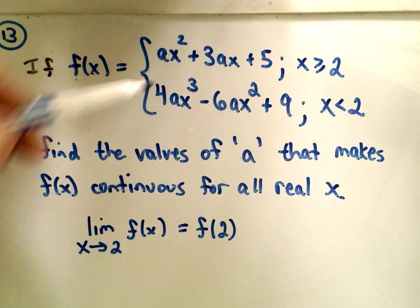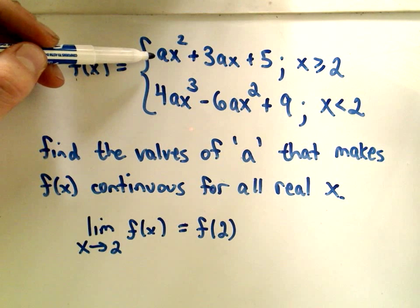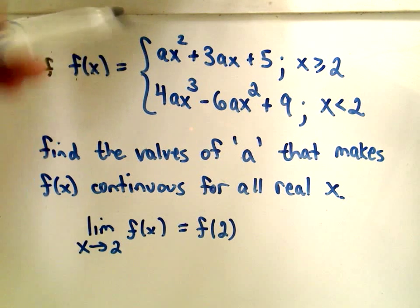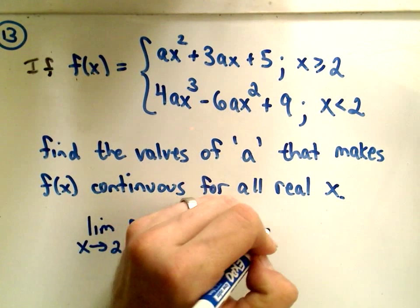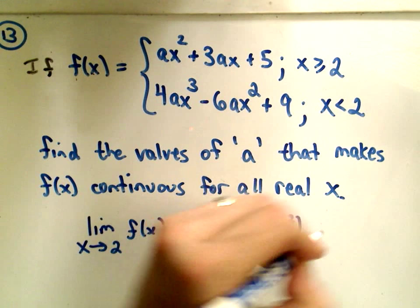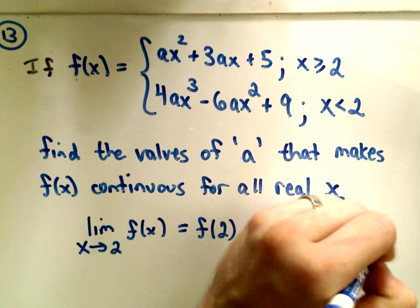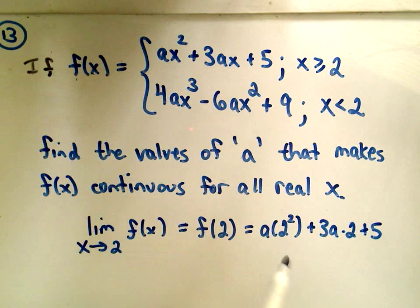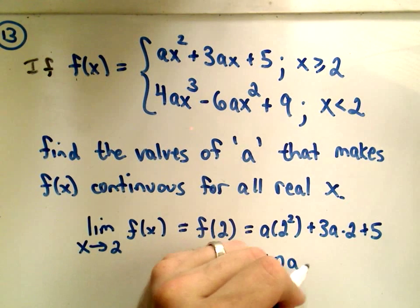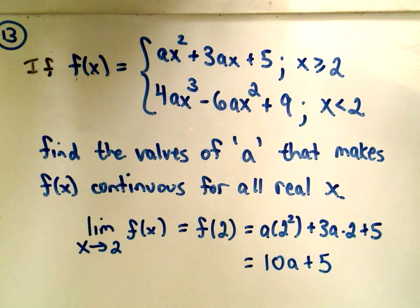We can compute f of 2 by plugging 2 into the first part of our function. So we'll get a times 2 squared plus 3a times 2 plus 5. And if we simplify that down, it looks like 4a plus 6a, which is 10a, plus 5.